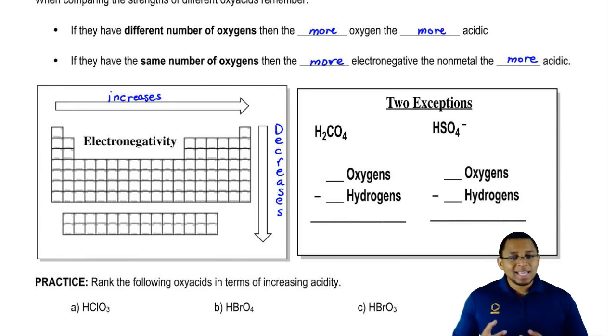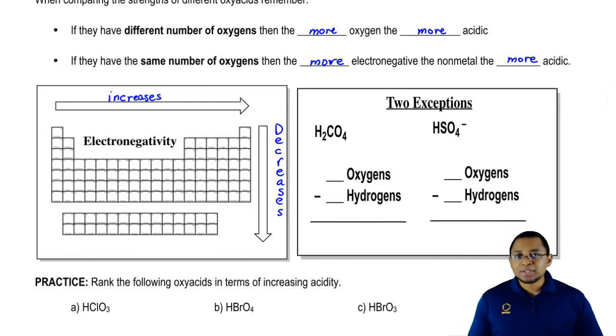Now with everything, we know in chemistry sometimes we learn rules and sometimes those rules have exceptions. We're going to talk about the exceptions to the rules we just learned. There are two major exceptions that we have.